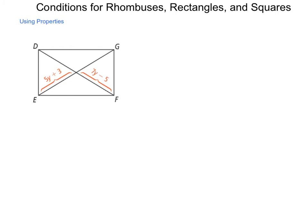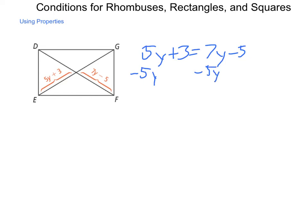If the diagonals are congruent, then these segments will be congruent as well. So we have the situation where 5y + 3 is equal to 7y − 5. Using our properties of equality, the subtraction property says we can subtract 5y from each side, giving us 3 = 2y − 5.